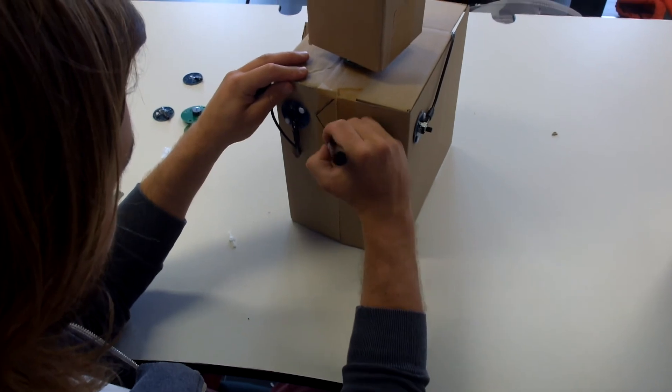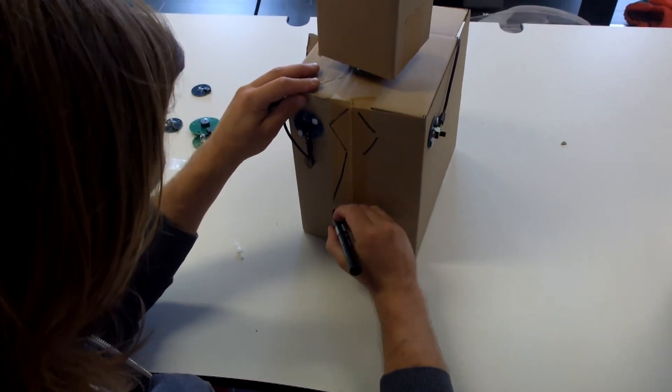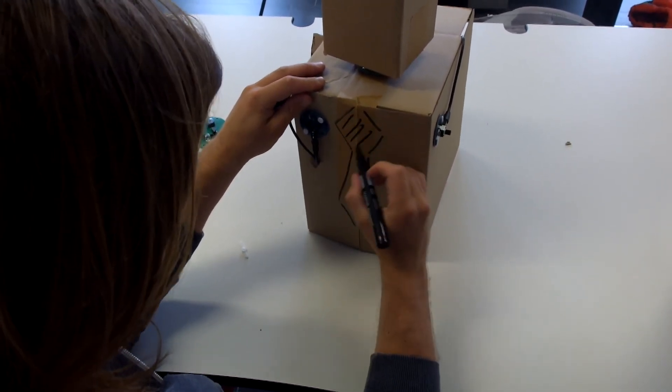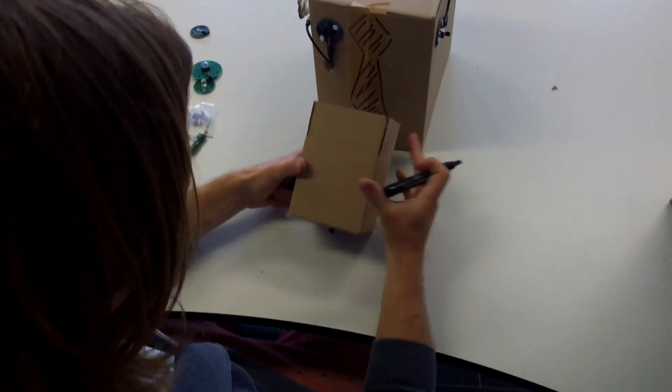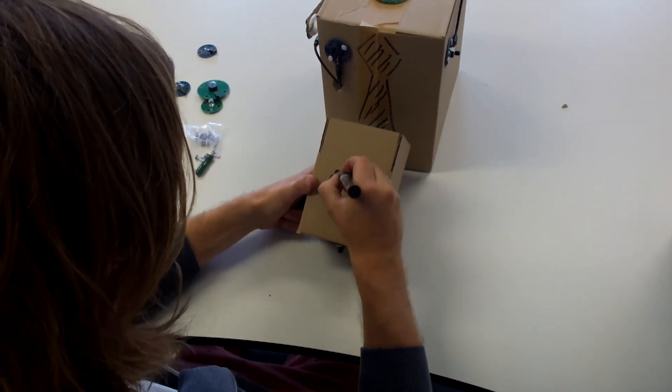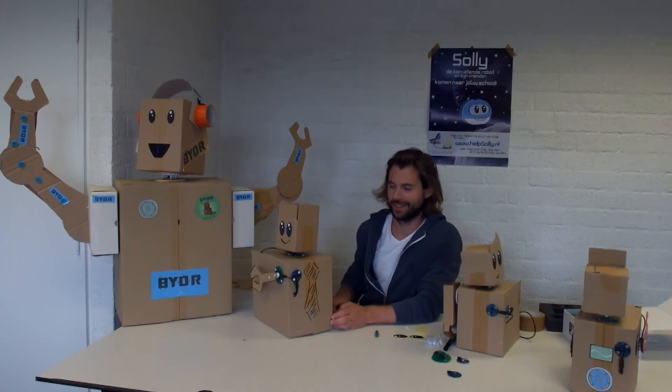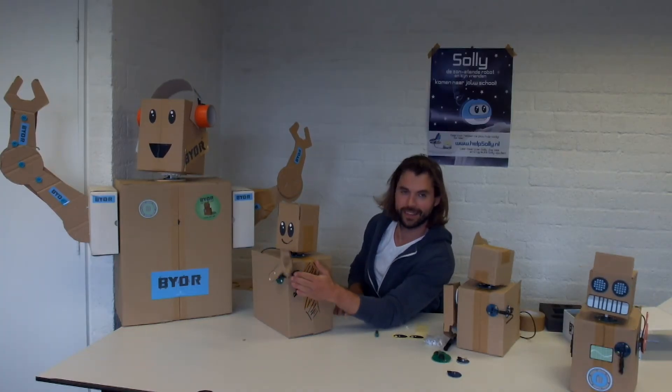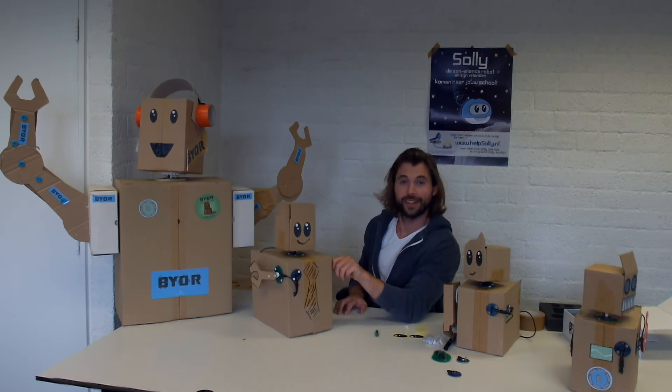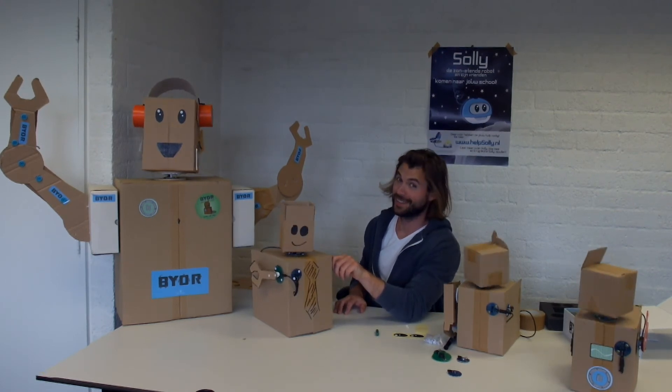Next we're going to decorate the robot. The key here is to first use a pencil because if you don't and you just use the marker right away, well I did that and let's say the results are visible. Once the robot is fully functional and decorated the way you like, you're done building this robot. You can be very proud of yourself.